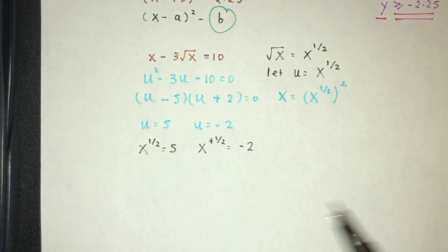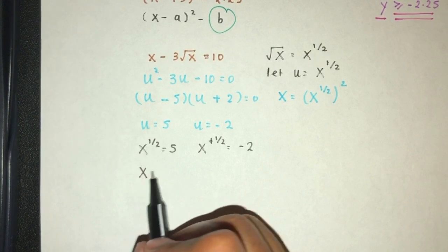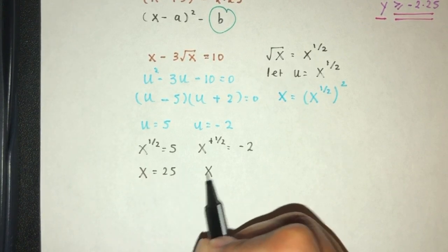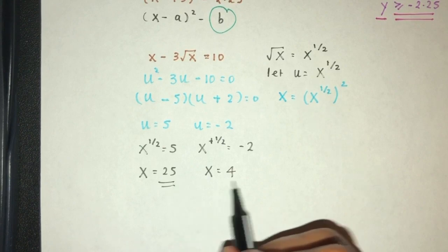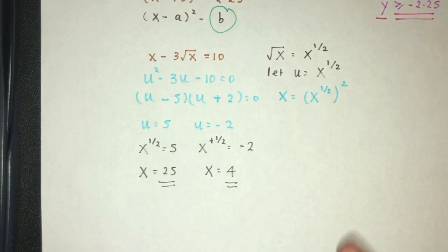So this half, we have to square both sides. You will have the x. That will be 25. x will be the value of 4. This is the values of x that we have for this equation.